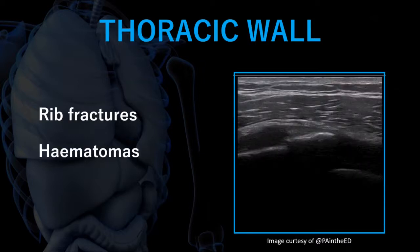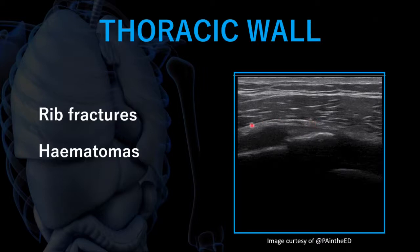When you do have rib fractures, you can also identify hematomas associated with those fractures. In this image, we have one part of the rib, the fracture line, and then the other part. This dark area just underneath the subcutaneous tissue and connective tissue layers is a dark hematoma underneath. You can track the size of those, making sure they're not getting worse and hopefully that they are resolving.